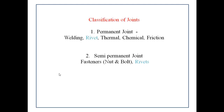When you assemble two or more elements using welding, thermal, chemical, or friction processes, the joint is called a permanent joint. The semi-permanent joint is useful for assembling and disassembling components based on user requirements. For proper maintenance and handling of components, semi-permanent joints are required. Semi-permanent joints use fasteners like nuts and bolts, and in some cases rivets.